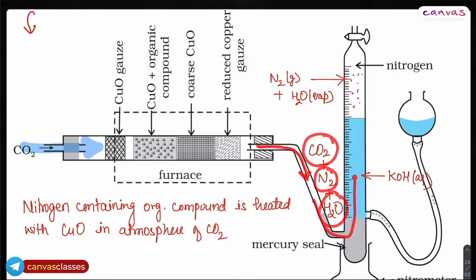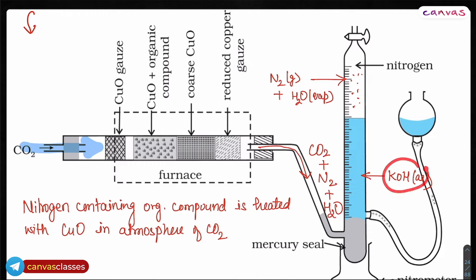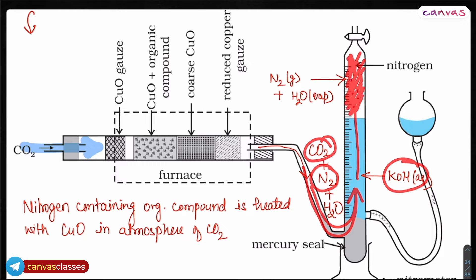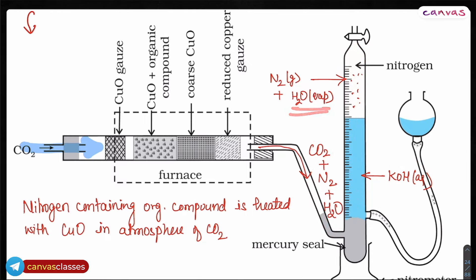Now when you pass this through the aqueous KOH solution — potassium hydroxide — being a base, it will absorb the carbon dioxide via an acid-base reaction. So all the carbon dioxide gets absorbed here, and water also stays here. The nitrogen gas is the only gas that goes up, so the gas collected at this particular place will be nitrogen and some water vapor, because as you've read in chemical equilibrium, water tends to establish its equilibrium.